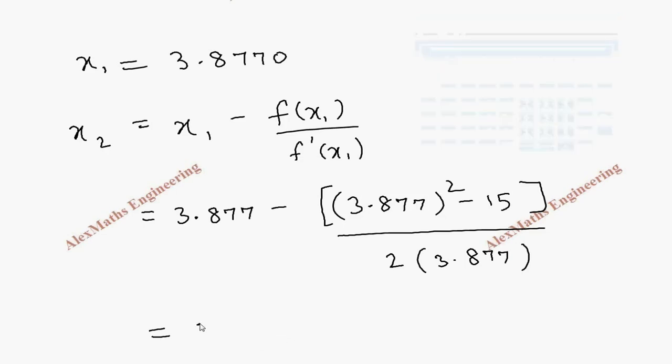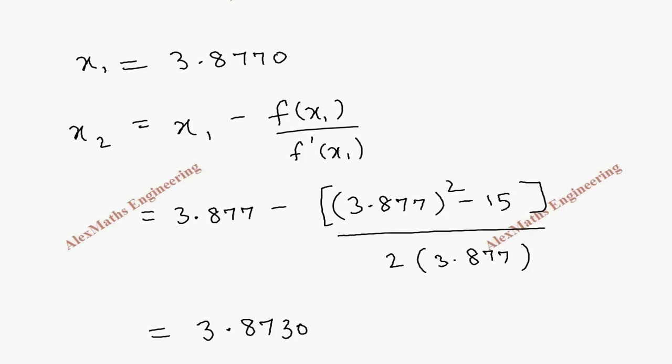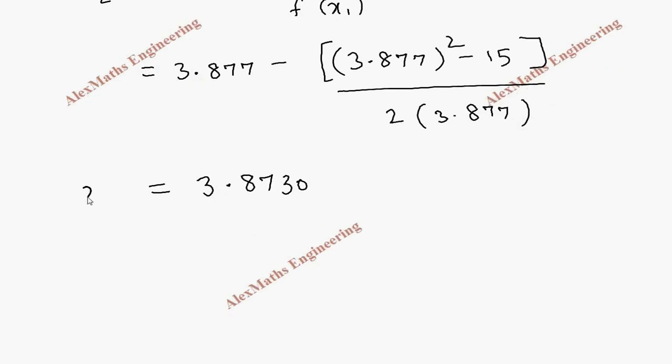So, we can round off to 4 decimal places, 3.873. It is actually 3.873. We got x2.